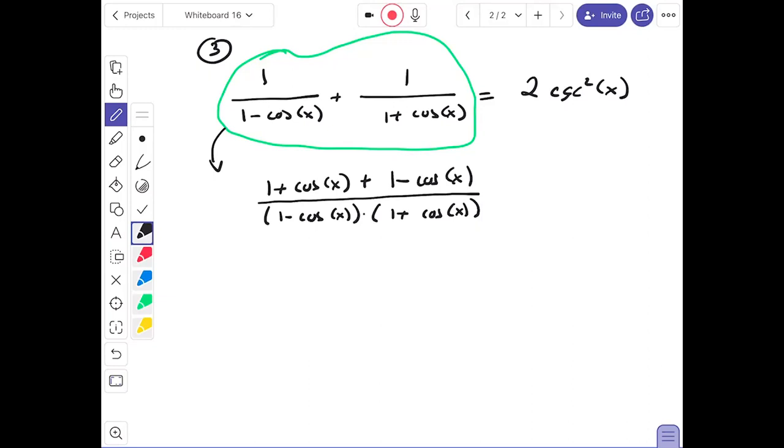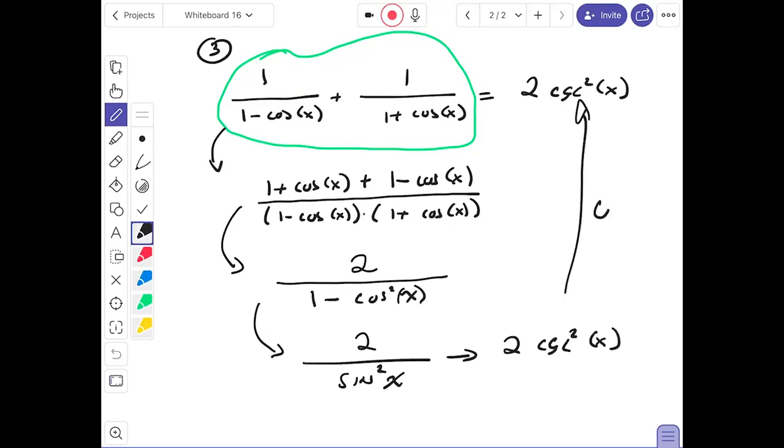What side allows the most rewriting? I'm going to circle the left side. I'm going to get common denominator. Two terms, looks like I'm aiming for one term. The denominator is (1 - cos(x))(1 + cos(x)). The numerator is (1 + cos(x)) + (1 - cos(x)). The cosines disappear on top, that's the number 2. If I multiply at the bottom, I get 1 - cos²(x). I recognize that to be sin²(x). And I recognize this to be 2csc²(x), QED.